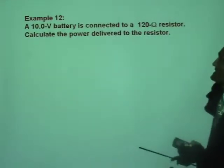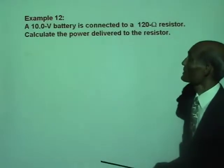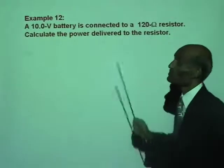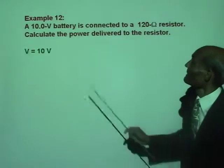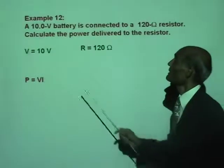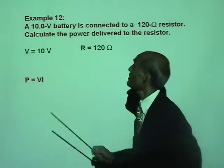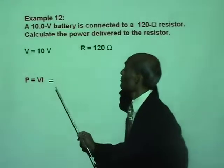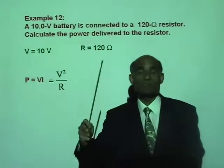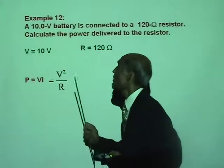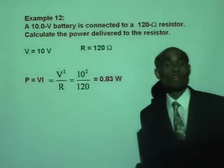A 10 volt battery is connected to a 120 ohm resistor — calculate the power delivered. We have voltage 10 volt and resistance 120 ohm. Using P equals V squared over R — because replacing I with V over R gives V squared over R — that is 10 squared over 120, which equals 0.83 watt delivered to the resistor.